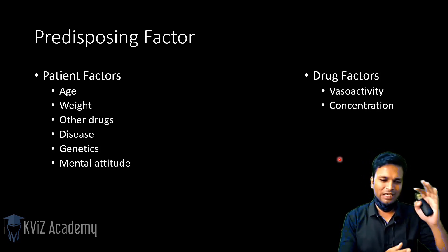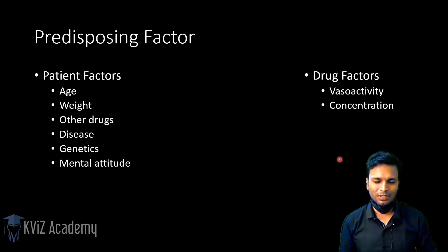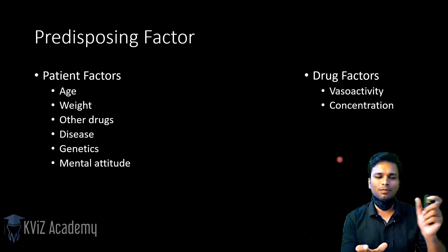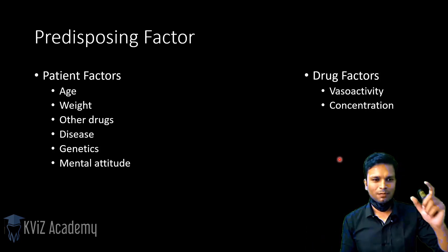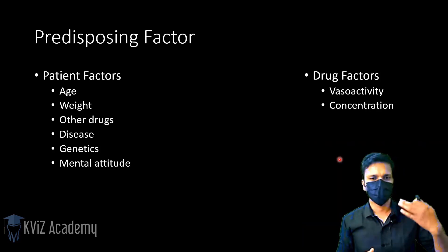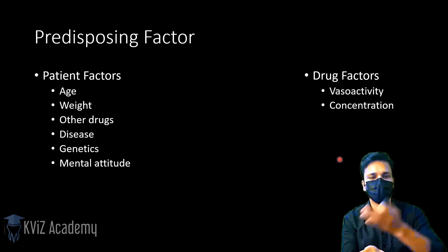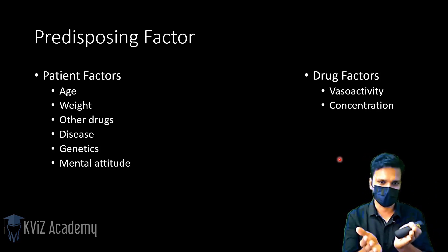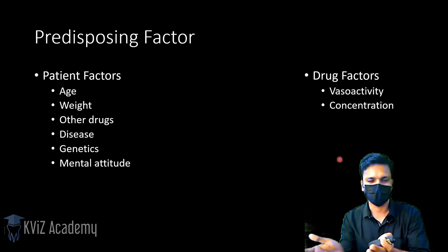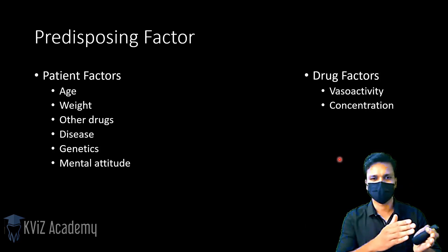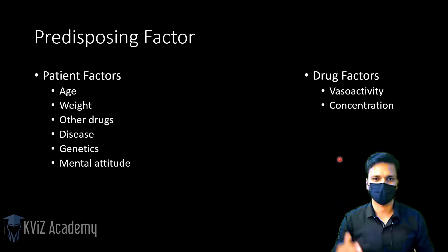The second drug factor is concentration. Lidocaine is available in 0.5%, 1%, and 2% concentrations. Comparing 1% and 2% lidocaine: 1 ml of 1% lidocaine contains half the number of molecules as 1 ml of 2% lidocaine. With 1% lidocaine, a larger volume is needed to reach toxic levels, whereas with 2% lidocaine a smaller volume suffices. Overdose incidence increases with higher drug concentration.